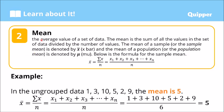Now, the mean. Mean is one of the measures of central tendency. This is the average value of a set of data. The mean is the sum of all the values in the set of data divided by the number of values. To solve for the mean, i-add lahat ng values and i-divide sa kung ilan lahat sila.